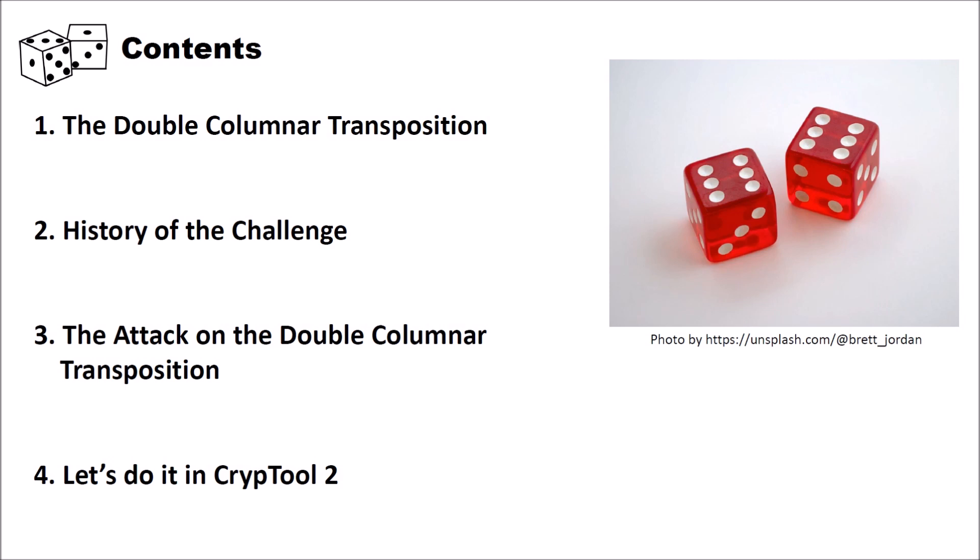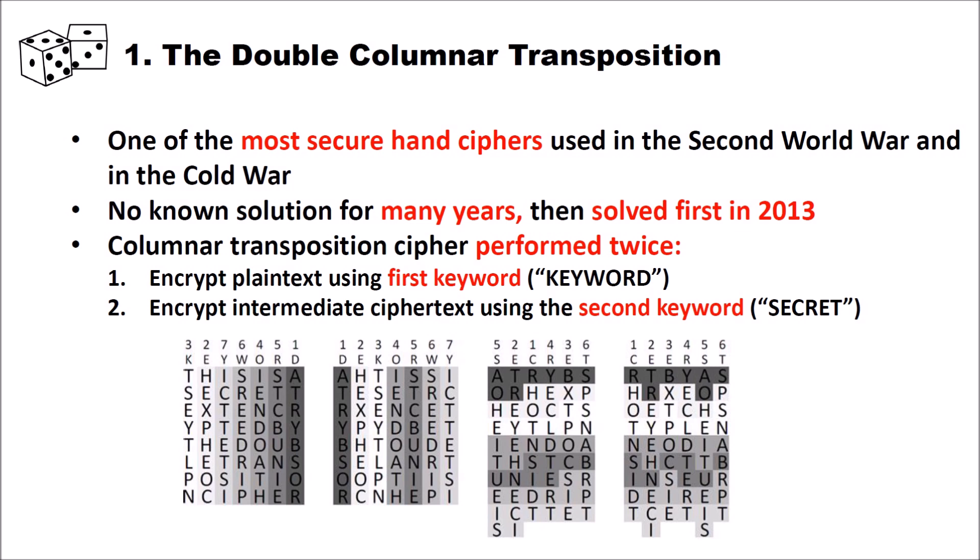The double columnar transposition cipher was one of the most secure hand ciphers used in the Second World War and in the Cold War. It was used by both sides. There was no known solution for many years for the double columnar transposition and also for the double columnar transposition challenge.